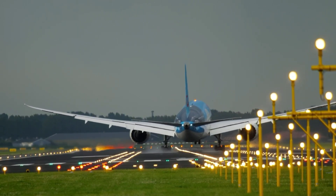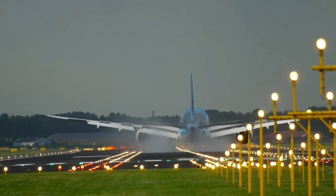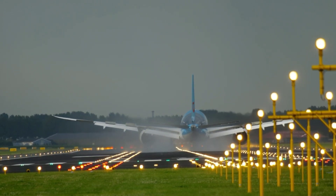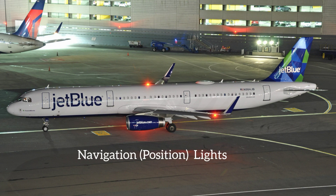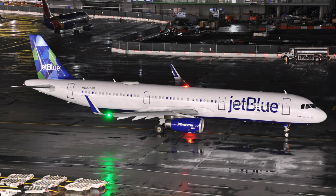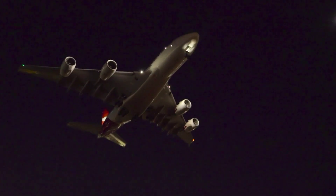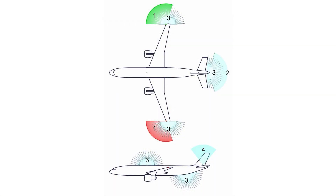Navigation or position lights are a legal requirement for night flying and are normally based on filament lamps providing steady illumination. They are located at the extreme tips of the aircraft wings and provide an indication of the aircraft's direction. Regulations define the color, location, and beam divergence so the aircraft is visible from any viewing angle. The green light unit is mounted on the right wing with a divergence of 110 degrees, the red light unit is mounted on the left wing with a divergence of 110 degrees, and the white light is located on the tail with a divergence of 140 degrees.